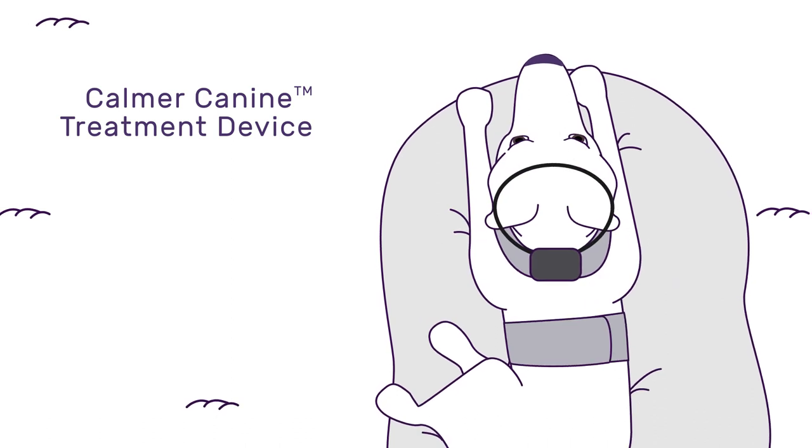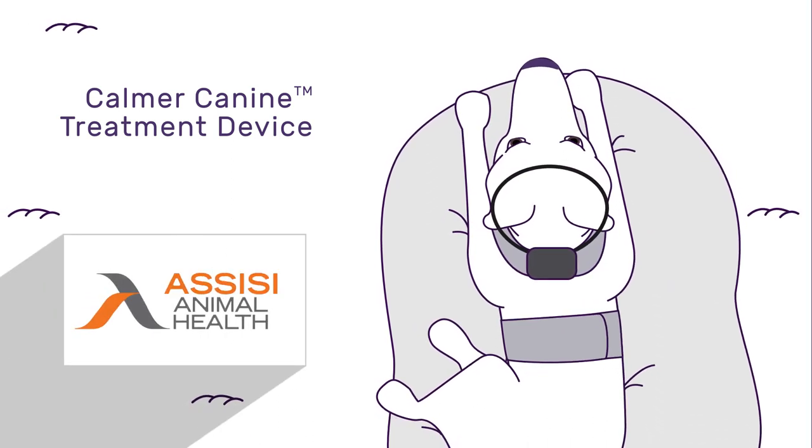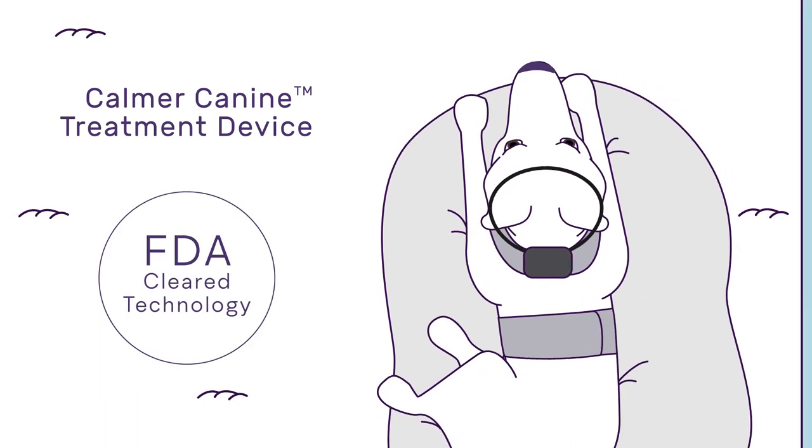Calmer Canine is an anxiety treatment device made by Assisi Animal Health. It's based on FDA-cleared technology used in people.